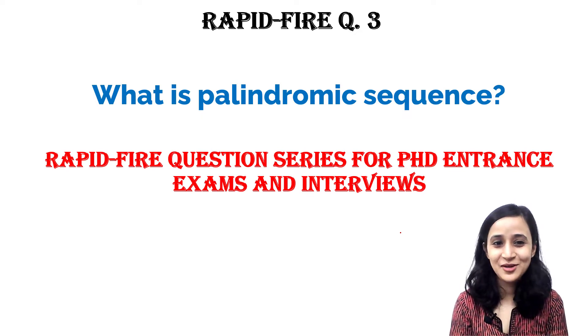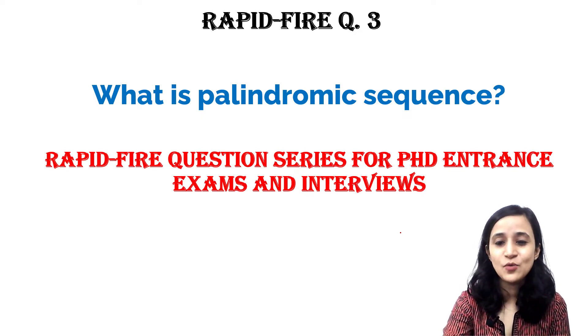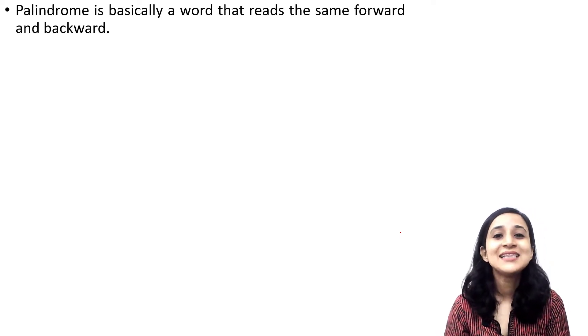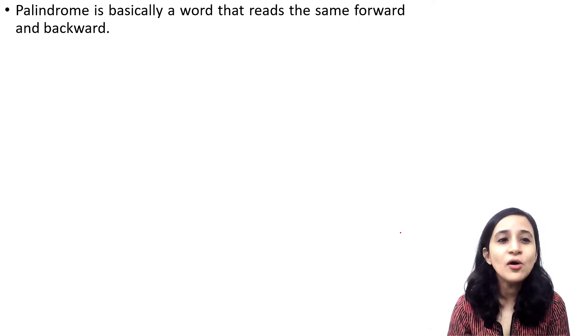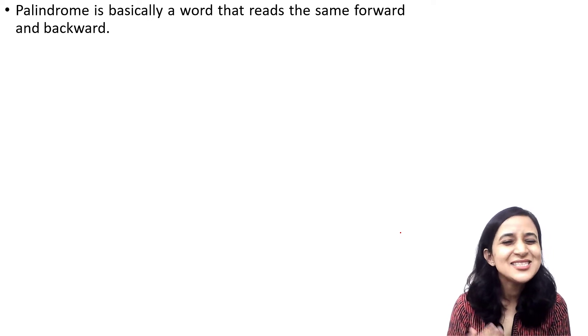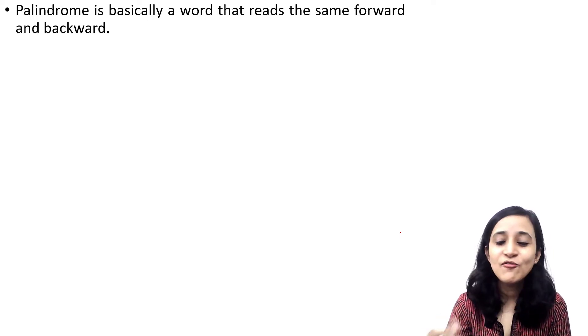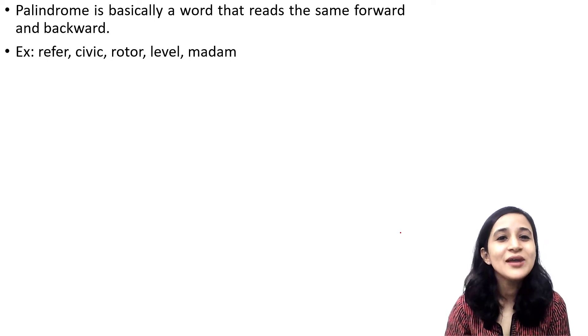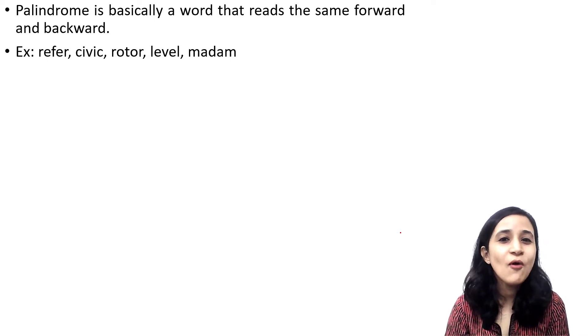What is palindromic sequence? Palindrome is basically a word that reads the same forward and backward. Examples you can see here: refer, civic, rotor, level, madam.